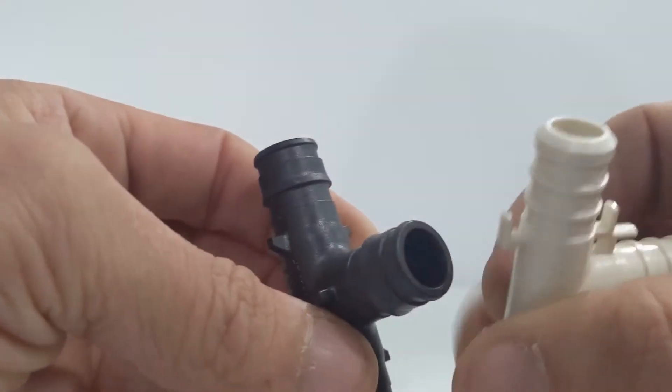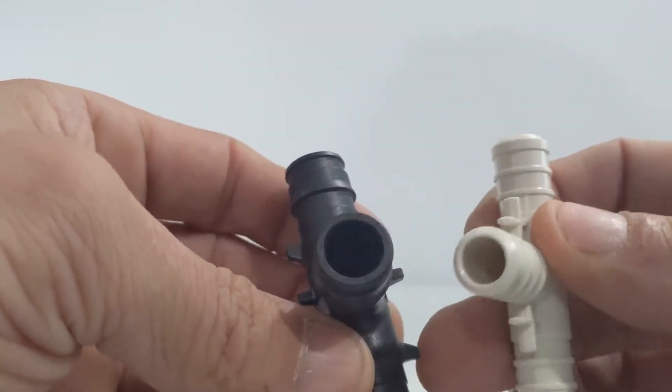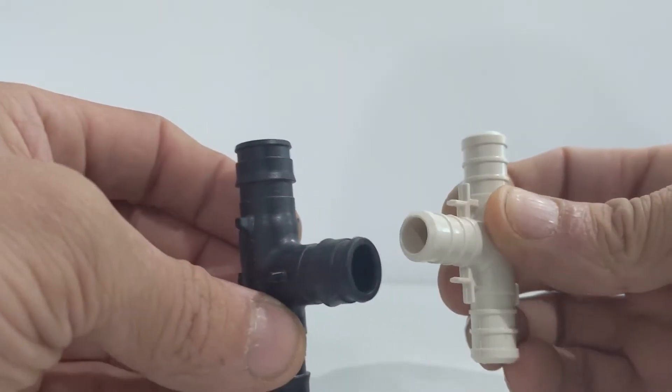When using PEX-B, what I like to do is oversize my water lines and that will ensure that I won't have any issues with pressure.